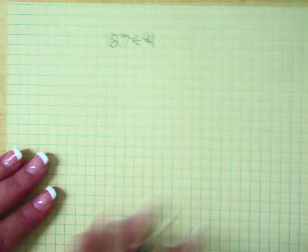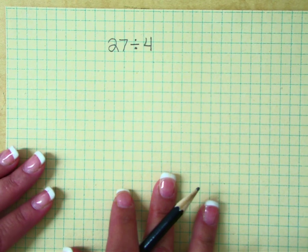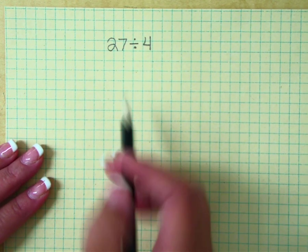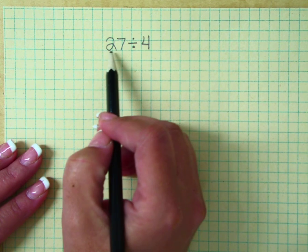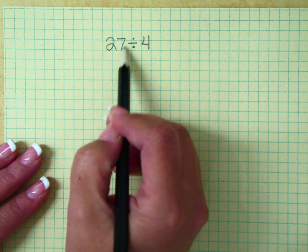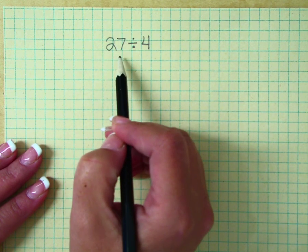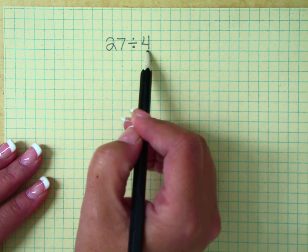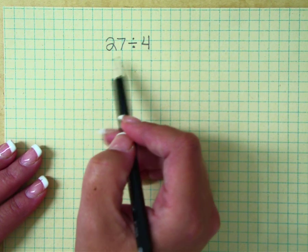Okay, today we're going to do division by building arrays. So just as a reminder, the big number here is our dividend and the smaller number is our divisor.